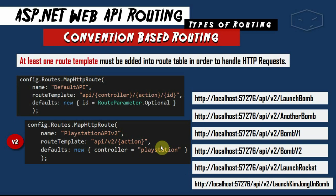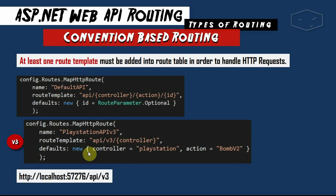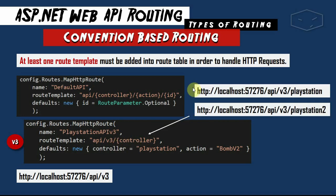This routes all the actions of the controller named PlayStation. If you notice, we don't need to specify the controller in our URI — just the action — because the action is a placeholder. In the third example, PlayStationApiV3, the route template is api/v3 with a placeholder for the controller and a default value of PlayStation. The action defaults to BombV2, so api/v3 will map to the PlayStation controller and BombV2 action.